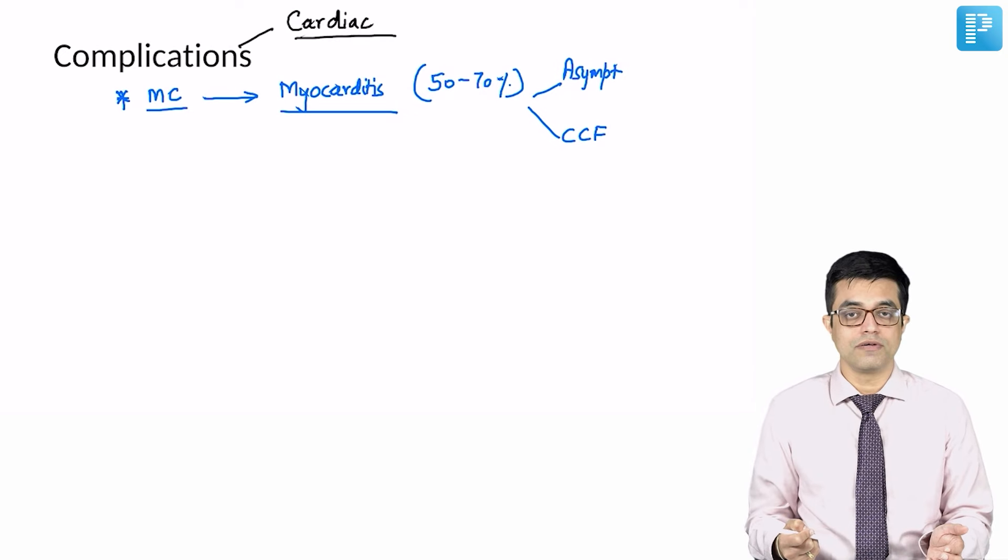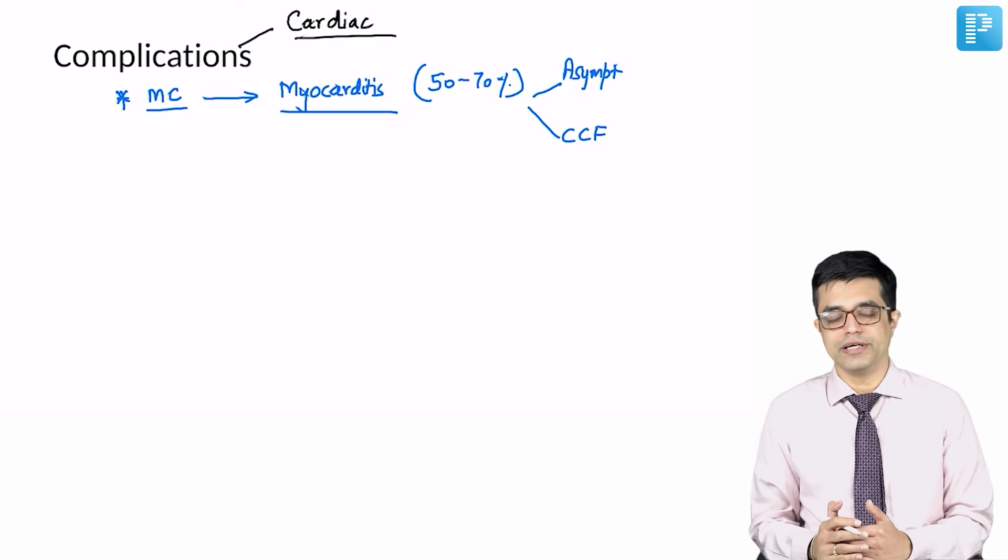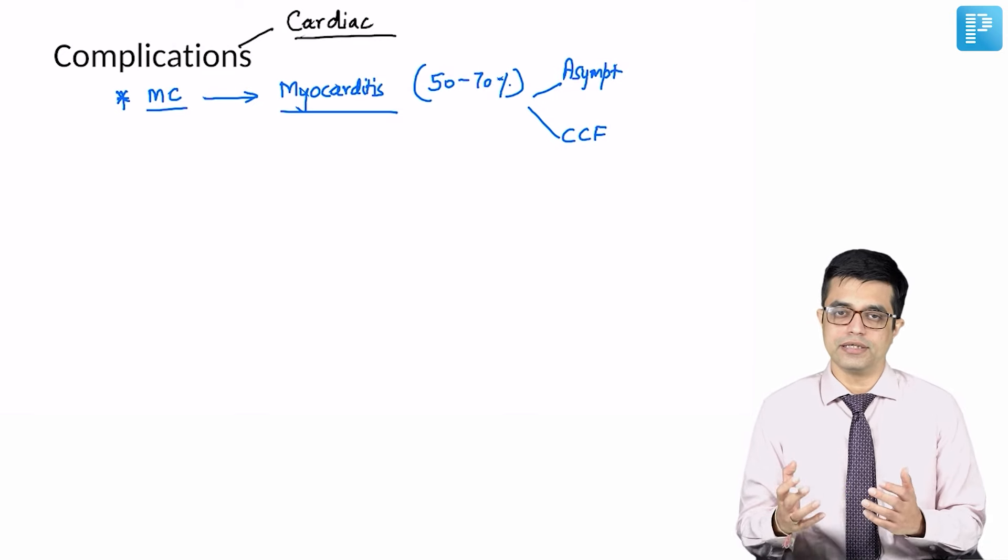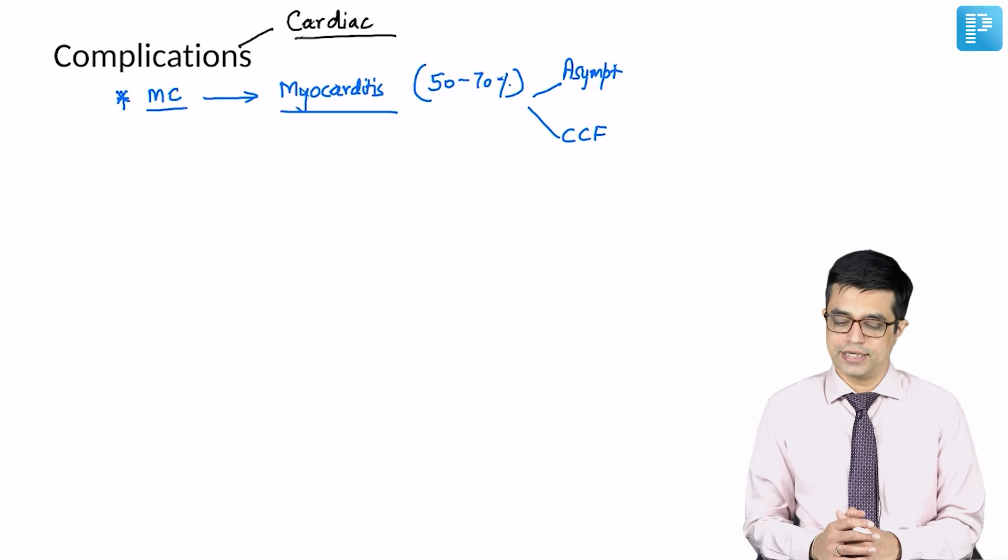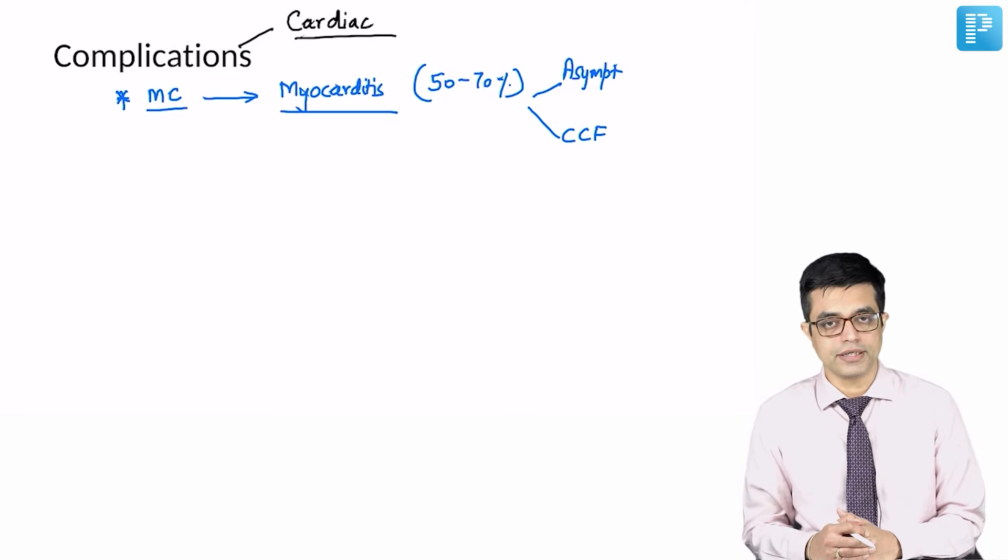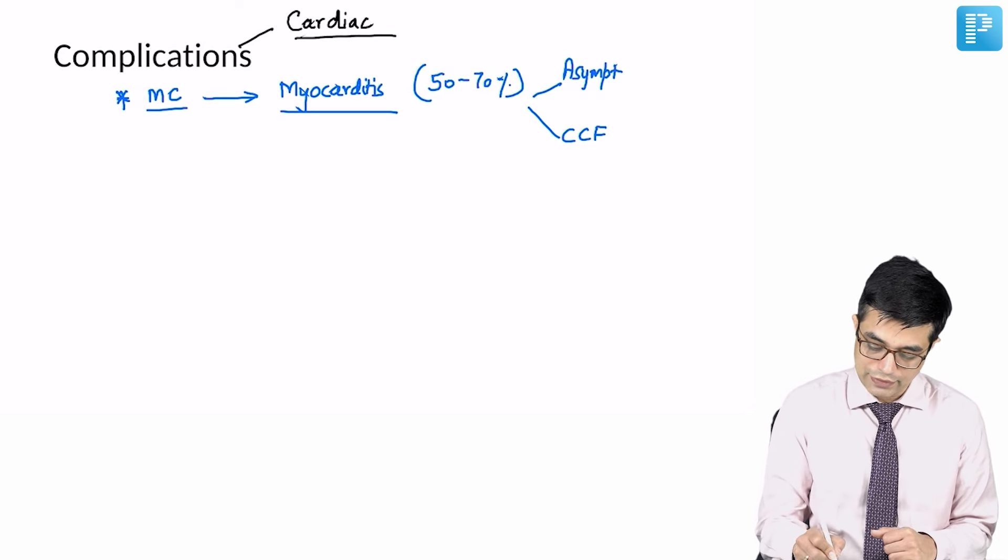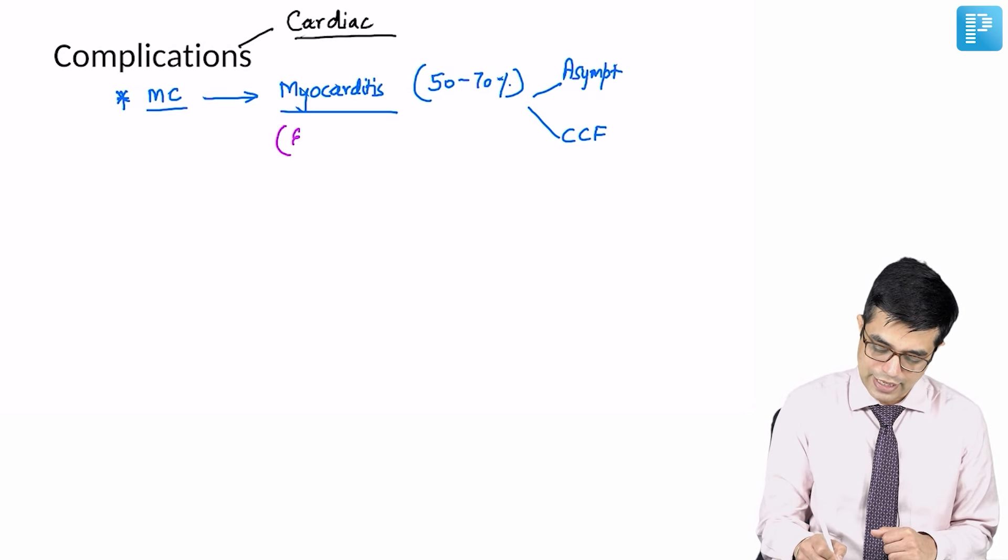Myocarditis tends to resolve either spontaneously or if the therapy of the underlying disease is started, that is IVIG, which also tends to resolve myocarditis. And when does myocarditis develop? It can develop even in the first week of illness.